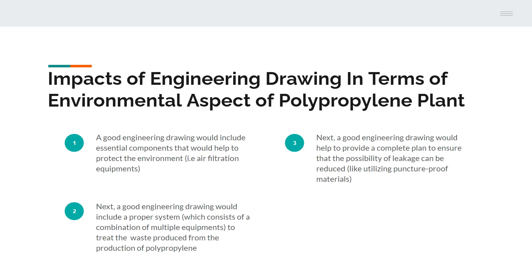Some of the impacts of engineering drawing in terms of the environmental aspect of the polypropylene plant — the first one would be that a good engineering drawing would actually include essential components that would help to protect the environment, like air filtration equipment. An ideal engineering drawing would help engineers as well as workers to provide suggestions for measures that would be put in place to protect the environment and reduce the level of pollution.